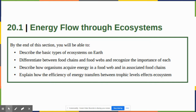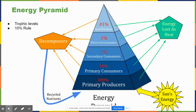By the end of this section you should be able to describe the basic types of ecosystems on Earth, the difference between food chains and food webs, describe how organisms acquire energy in a food web, and explain how the efficiency of energy transfers between trophic levels affects ecosystems — we've mostly already covered this.